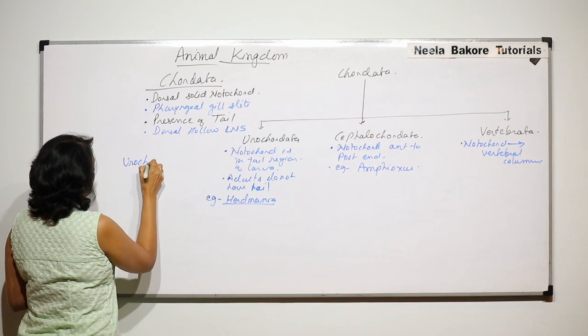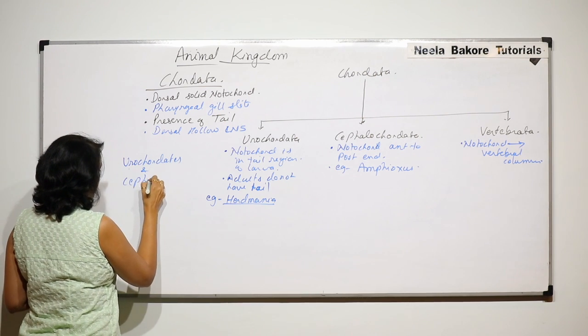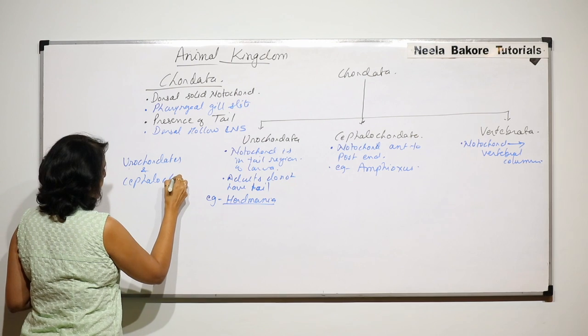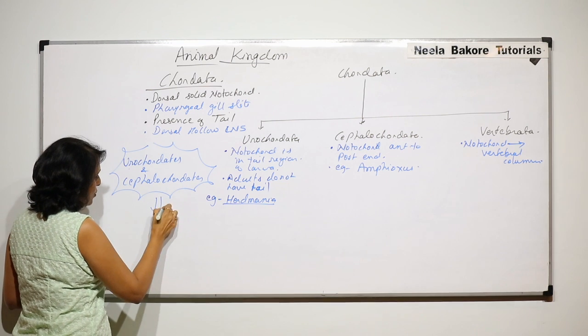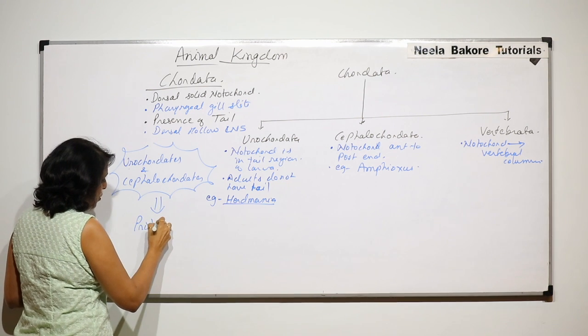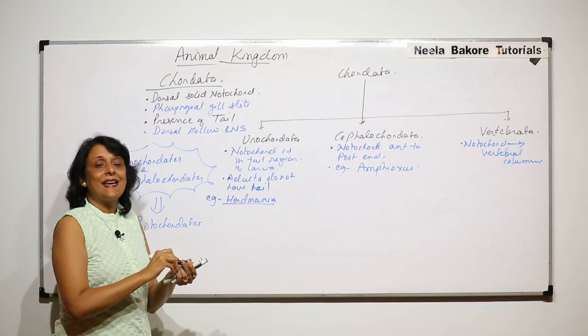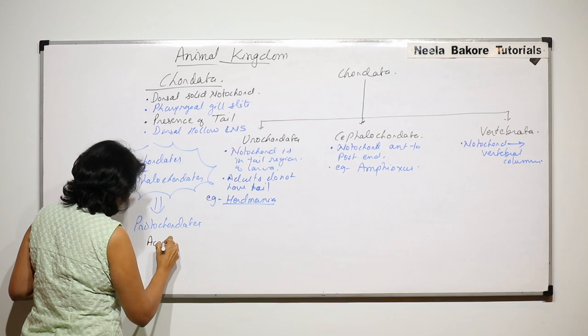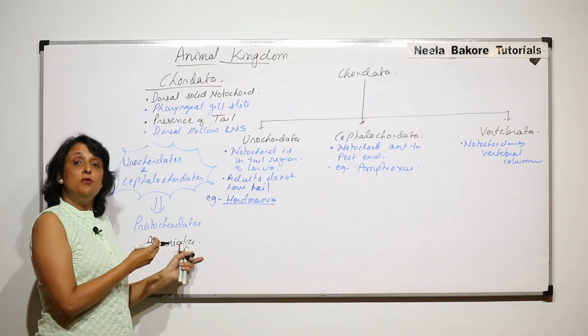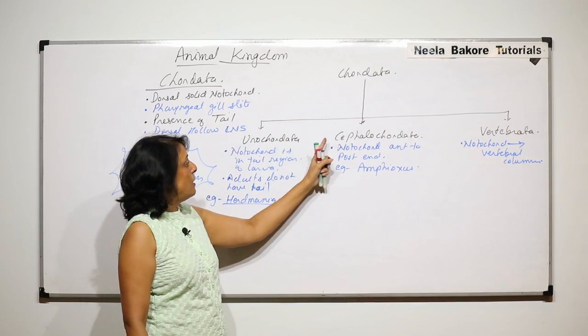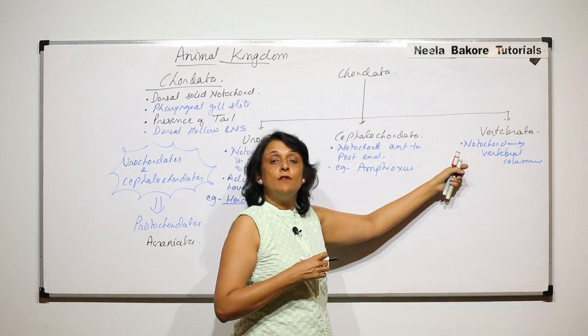Urochordates and Cephalochordates together are also known as Protochordates or they are also called Acraniata. Cranium is the brain box, so they do not have the brain box.